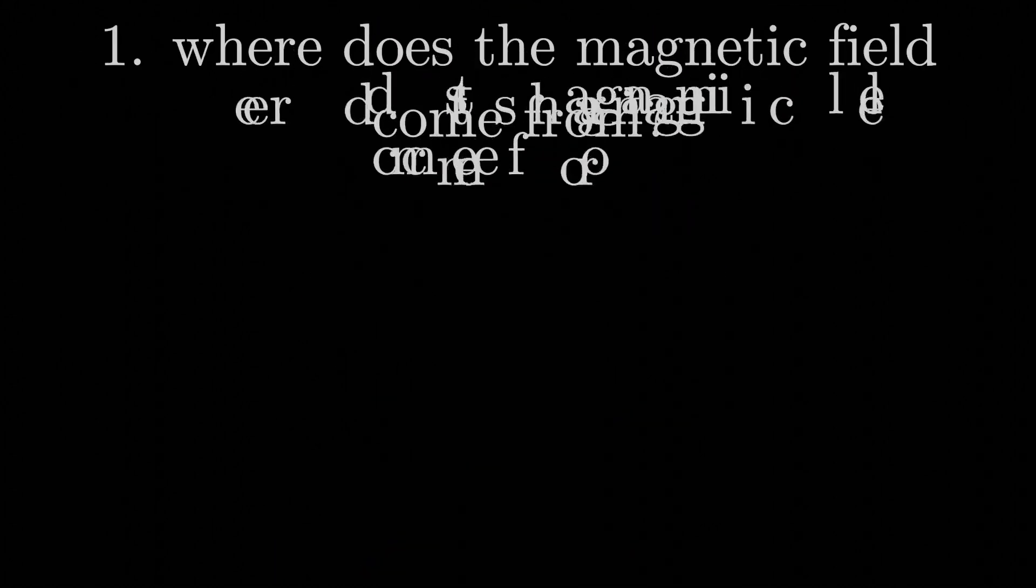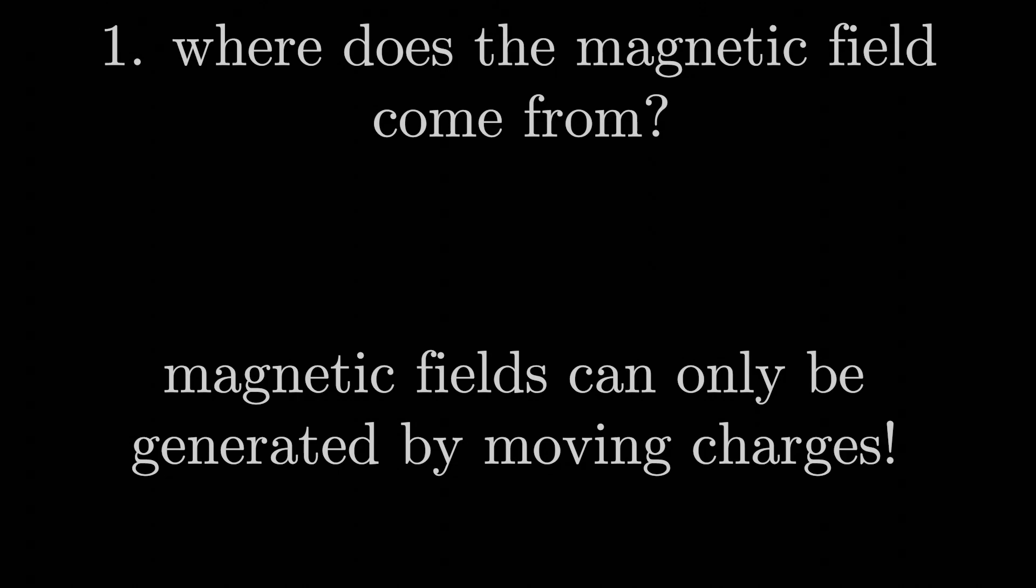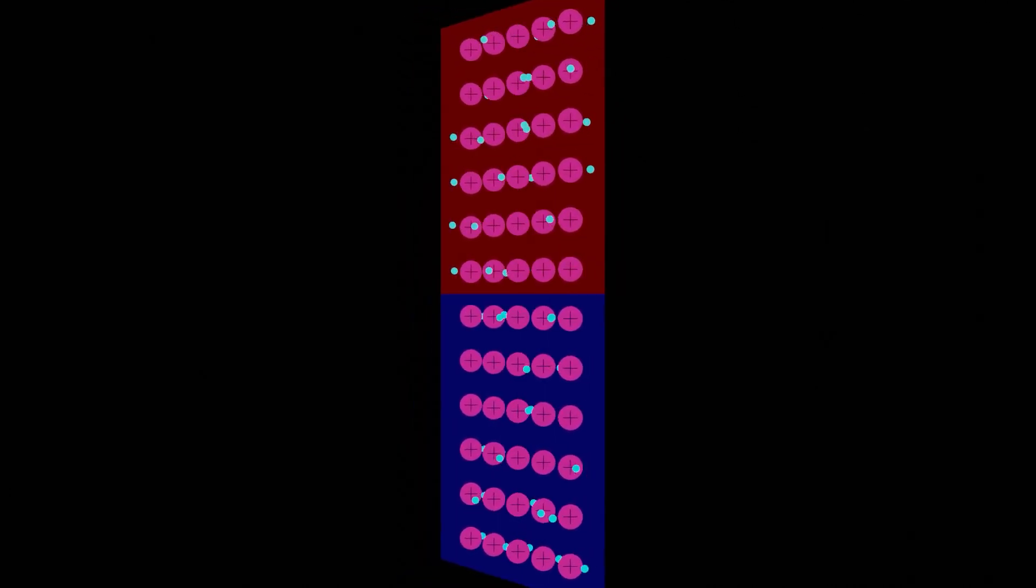Didn't we already establish that magnetic fields can only be generated by moving charges or electric current? That's true, but did you forget that the atoms within our magnet contain moving charges themselves? Namely, each atom's got its own set of electrons buzzing around it like honeybees.